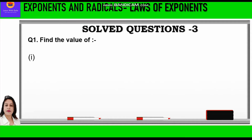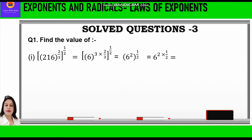Question 1, find the value of: the first part is 216 raised to power 2 by 3, whole raised to power half. Now 216 is 6 cube, so we shall write 6 cube raised to power 2 by 3, whole raised to power half. The 3s will cancel and we write 6 square whole raised to power half. This is power into power, so we write 6 squared into 1 by 2, which is equal to 6.